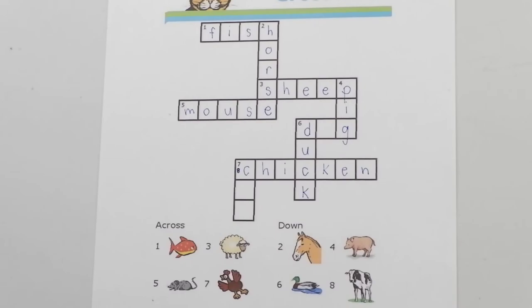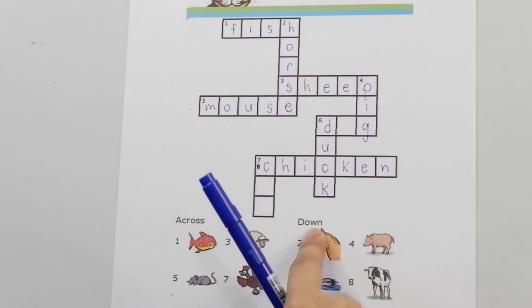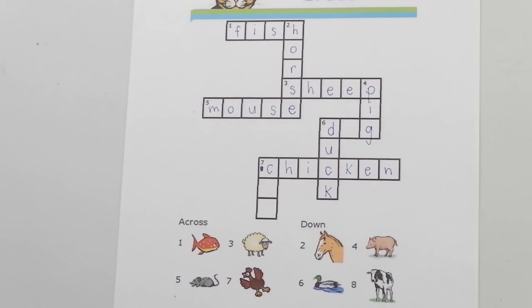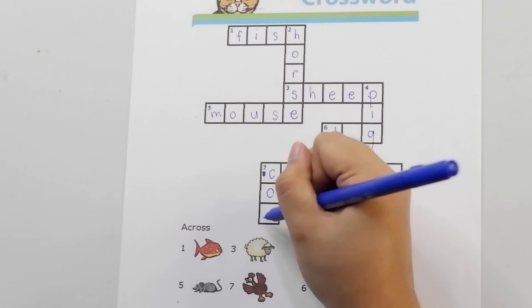Now, chameleons, let's go to number eight. For number eight, the answer is a cow. And it says it should go down. So, we have to write cow vertically going down. Let's go to box number eight. C is already written. O-W. Cow.